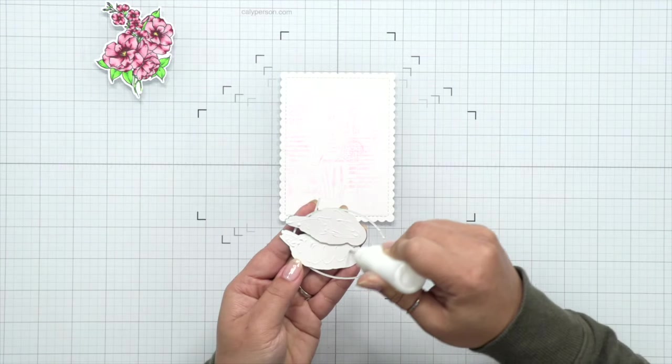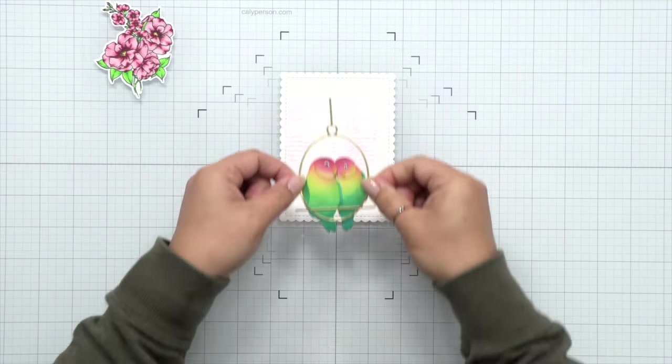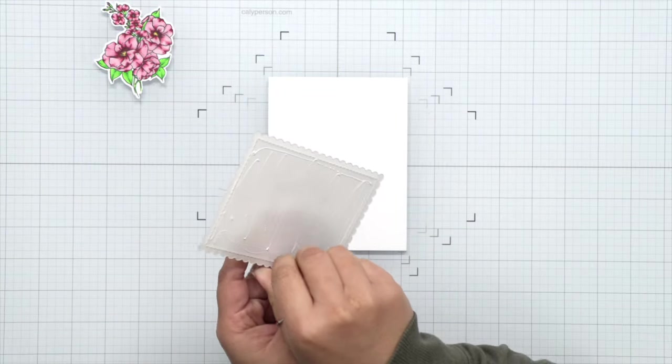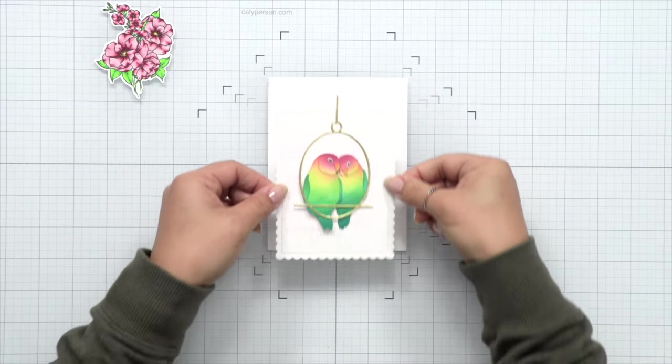Now I'm going to frame this with the A2 scallop die. Then I'll attach my birds, making sure to center it. I'm using the grid marks on my glass board there to make sure everything lines up perfectly.